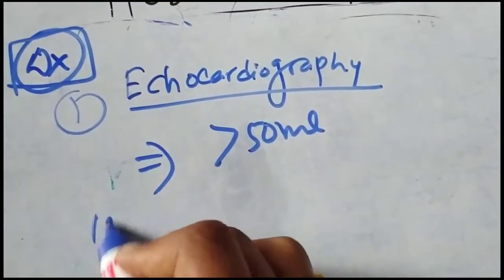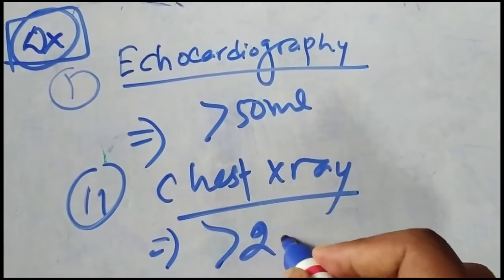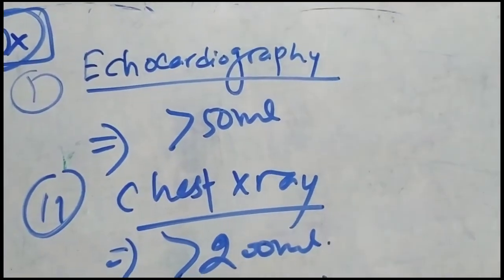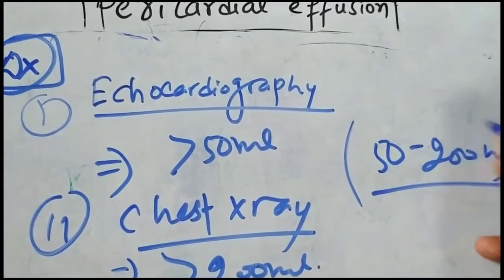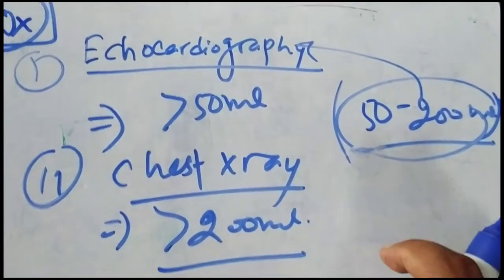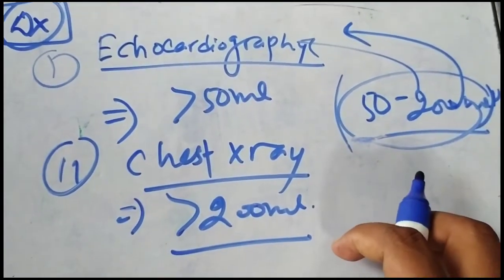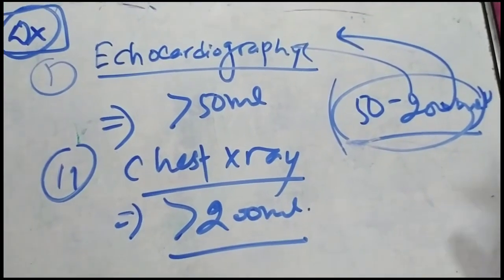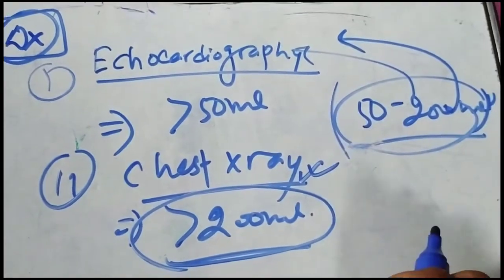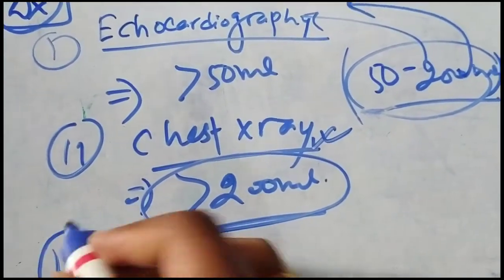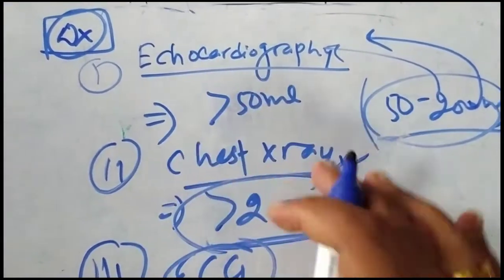Another investigation is chest X-ray, but chest X-ray is useful only when the fluid is greater than 200 ml. So if a person has fluid between 50 and 200 ml, the investigation of choice is echocardiography. If the fluid is greater than 200 ml, echocardiography remains the investigation of choice, but chest X-ray findings will also be visible. The third investigation is ECG, which can also help diagnose pericardial effusion.